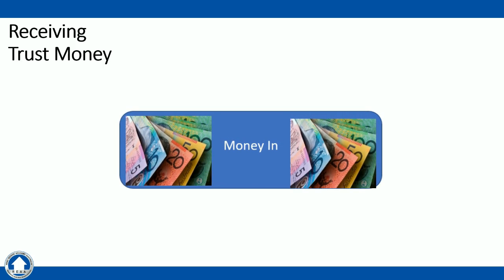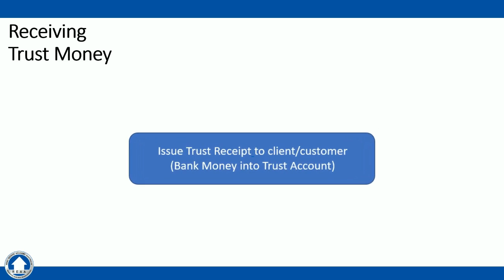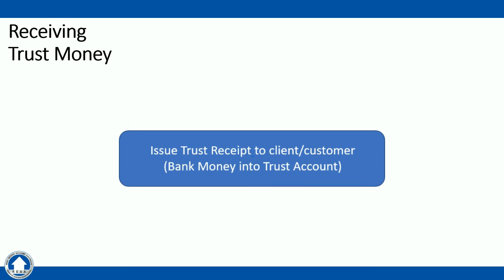We'll take a closer look at the processes involved in receiving trust money. The first step is that the money comes in. The money can come in by way of cash, EFT, direct transfers, or cheques — all of these are valid ways that someone can pay money to the agency, and from there our process begins. The next step is to issue a trust receipt to the client or customer that has paid the money to the agency.